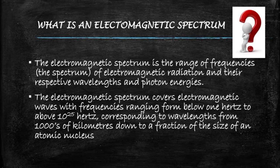Now let's see what an electromagnetic spectrum actually means. It is the spectrum of electromagnetic radiation and their respective wavelengths and photon energies. The range of frequencies varies from below 1 Hz to about 10^25 Hz, corresponding to wavelengths from thousands of kilometers down to a fraction of the size of an atomic nucleus. This is because wavelength is inversely proportional to frequency.